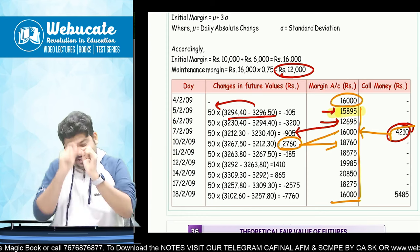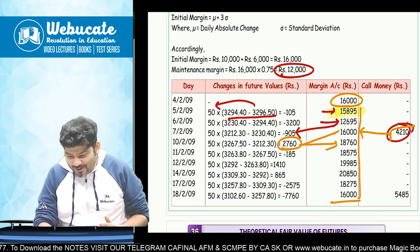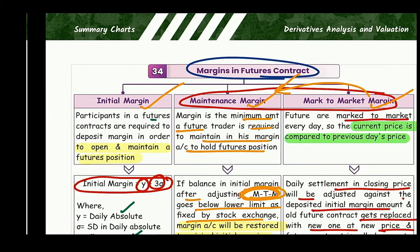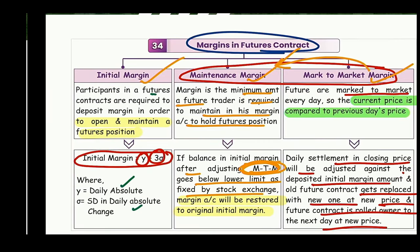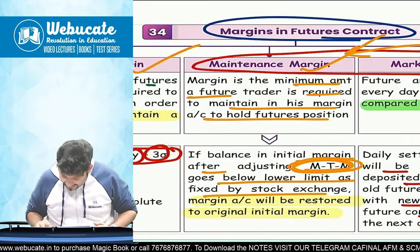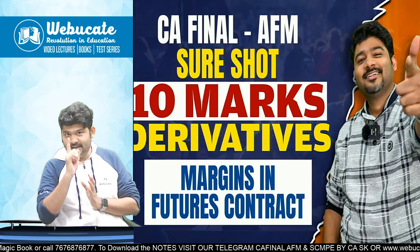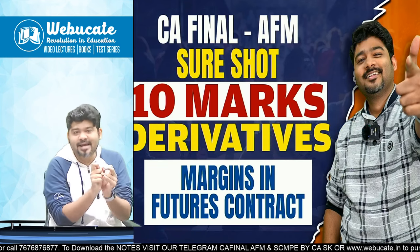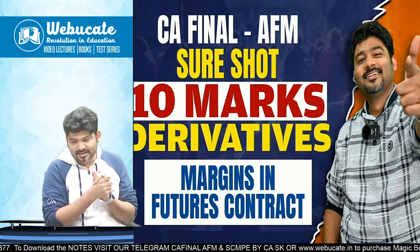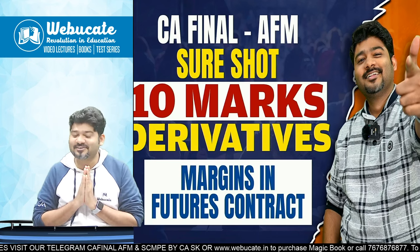That is how margins in futures contracts work — initial margin, maintenance margin, and mark-to-market margin. I hope these three concepts are clear with the example. The note will be shared on my Telegram channel — please join. Like, share, subscribe and hit the bell icon so you get notifications. Let me know in the comments how you liked the session and what other concepts you want covered. Until next time, keep smiling — thank you and bye!